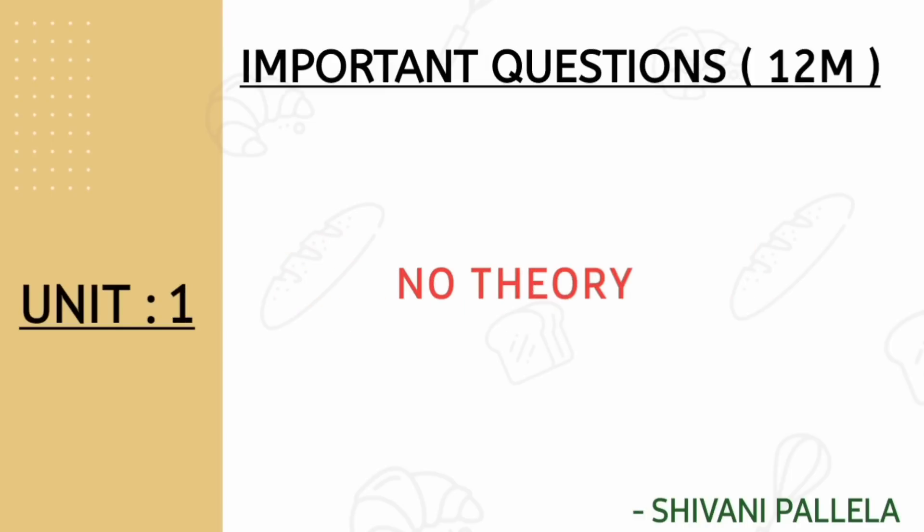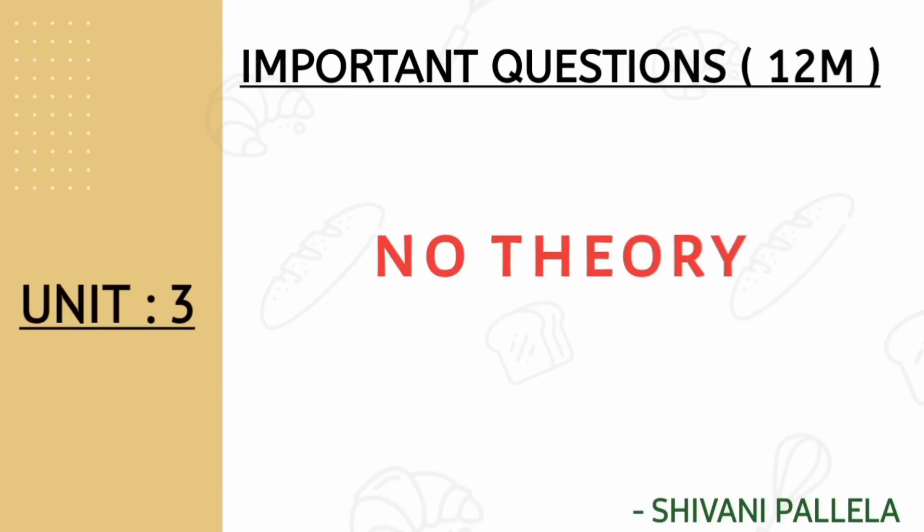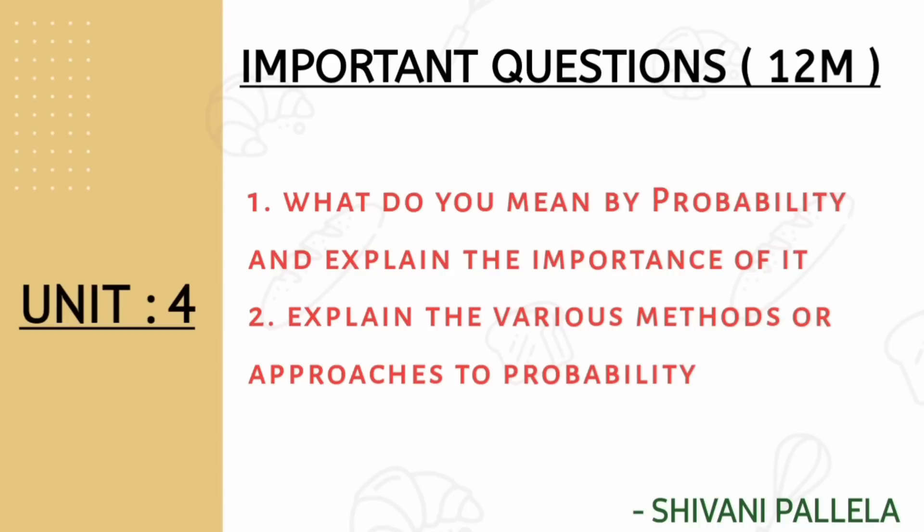In Business Statistics 2, you need to concentrate especially on problematics — not theory. From unit number one there are no important theory questions at all. In unit number two, if they ask a theory question it will be Index Numbers related. In unit number three also, no theory questions — both questions will be problematic only.